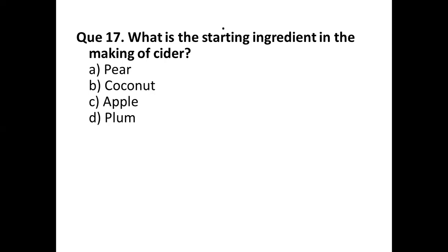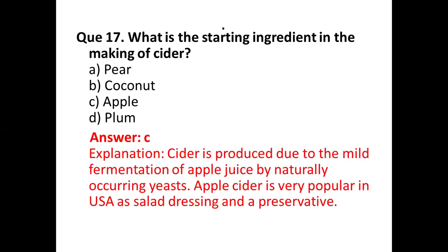Question number seventeen: what is the starting ingredient in the making of cider? Options are: (a) pear, (b) coconut, (c) apple, (d) plum. The correct answer is option (c) apple. Cider is produced due to the mild fermentation of apple juice by naturally occurring yeast. Apple cider is very popular in the USA, used in salad dressings and as a preservative.